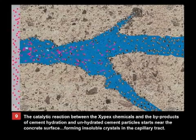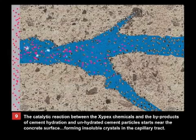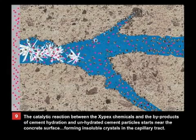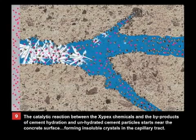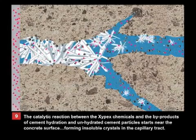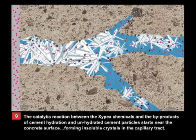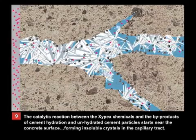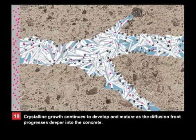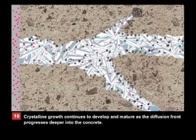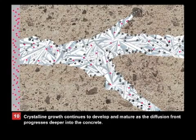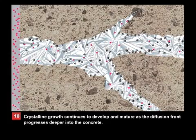The catalytic reaction between the Xypex chemicals and the byproducts of cement hydration and unhydrated cement particles starts near the concrete surface, forming insoluble crystals in the capillary tract. Crystalline growth continues to develop and mature as the diffusion front progresses deeper into the concrete.